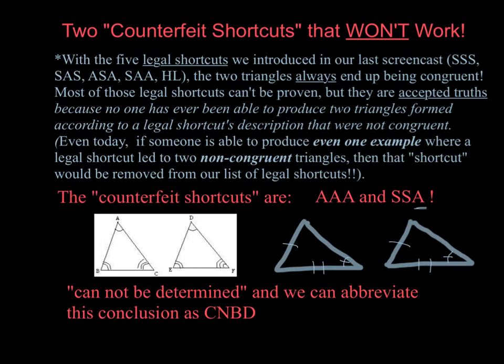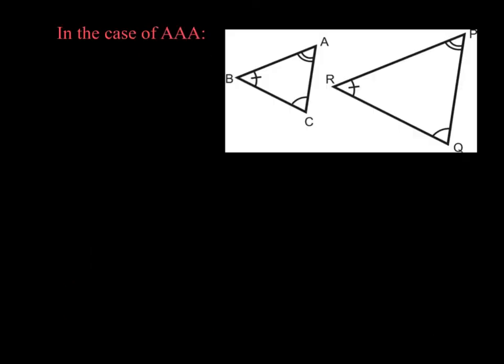Now I'm going to take a closer look at the two specific cases and show why we can't guarantee that they're congruent. A reminder that congruent triangles means the two triangles would be the same size and shape. Here I have a diagram of angle-angle-angle.